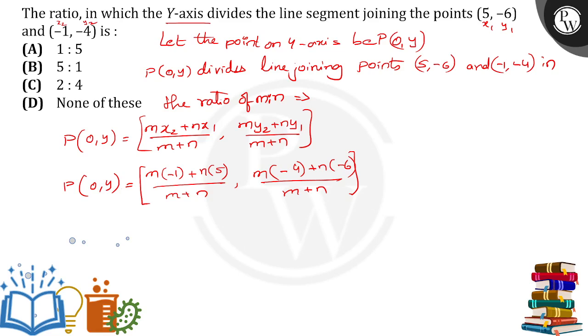So here point P 0 comma y means the point abscissa of the point is equal to abscissa of RHS and abscissa of LHS are equal. The same way ordinate of RHS and ordinate of LHS will be equal. So if we do it in that way, these two abscissa will be equal, that is minus 1 m plus 5 n by m plus n is equal to 0.